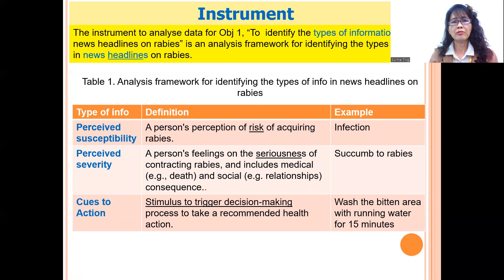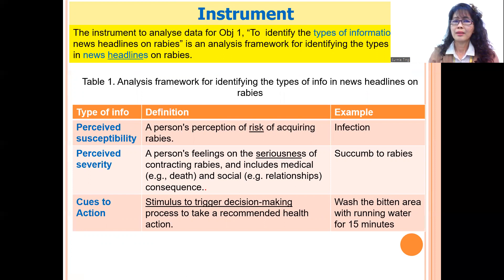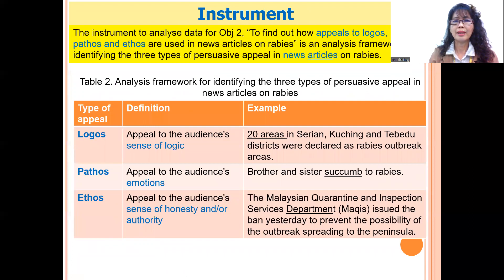The instruments for this study are two. The first, for objective one, covers types of information taken from the Health Belief Model — the three constructs of perceived susceptibility, perceived severity, and cues to action. The second is an analysis framework based on Aristotle's rhetoric for logos, pathos, and ethos. I follow these definitions and examples when analyzing the newspaper articles.